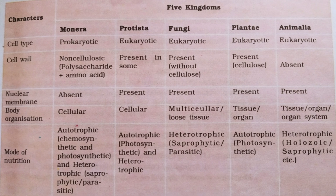The third kingdom is Kingdom Fungi. Kingdom Fungi are eukaryotic forms. The cell wall is present in them but without cellulose. The nuclear membrane is present and body organization is multicellular or loose tissue. Mode of nutrition is heterotrophic — they may be either saprophytes or parasitic.